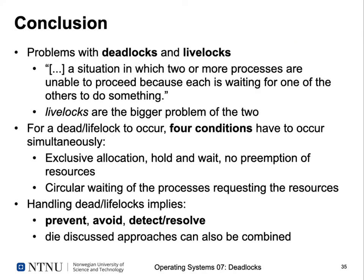To conclude: we've seen problems with deadlocks and livelocks, defined as a situation in which two or more processes are unable to proceed because each is waiting for one of the others. Livelocks actively waste compute time without useful results and are actually the bigger problem. For deadlock or livelock to occur, four conditions must hold simultaneously: exclusive allocation, hold and wait, no preemption, and circular waiting. To handle deadlocks or livelocks, we can try to prevent, avoid, or detect and resolve them, and these approaches can be combined. That's all about deadlocks for today. Thanks for listening.